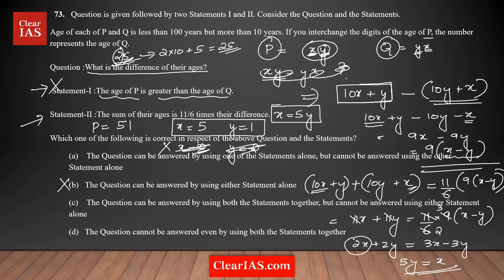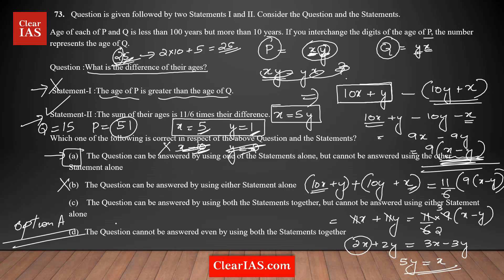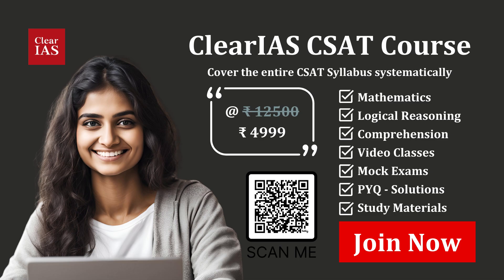Using Statement 2 alone, we get P = 51 and Q = 15, so we can find the difference. Statement 2 alone is sufficient to answer the question, making option A the correct answer — the question can be answered using Statement 2 alone but not Statement 1 alone. Remember: whenever you deal with a two-digit or three-digit number and reverse it, always use the numerical representation form to frame your equations.